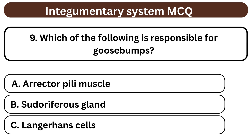Question 9. Which of the following is responsible for goose bumps? A. Erector pili muscle. B. Sudoriferous gland. C. Langerhans cells. The answer is A. Erector pili muscle.